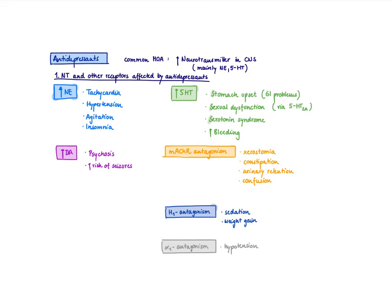One other neurotransmitter that can be increased by antidepressants is dopamine - at least one drug does so. Increased dopamine levels can obviously lead to psychosis and can also lower the seizure threshold, so you're going to have an increased risk of seizures. A lot of the antidepressants we're going to discuss also have off-target effects - they block other receptors, so they're kind of the dirty drugs.